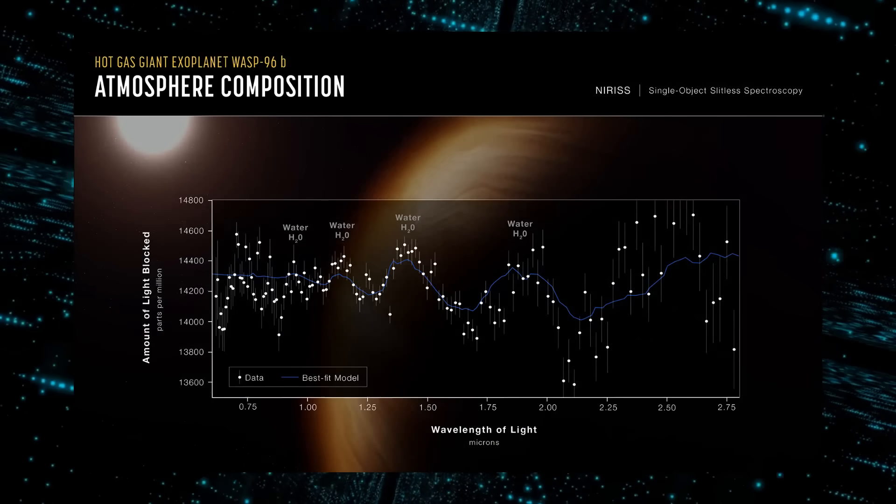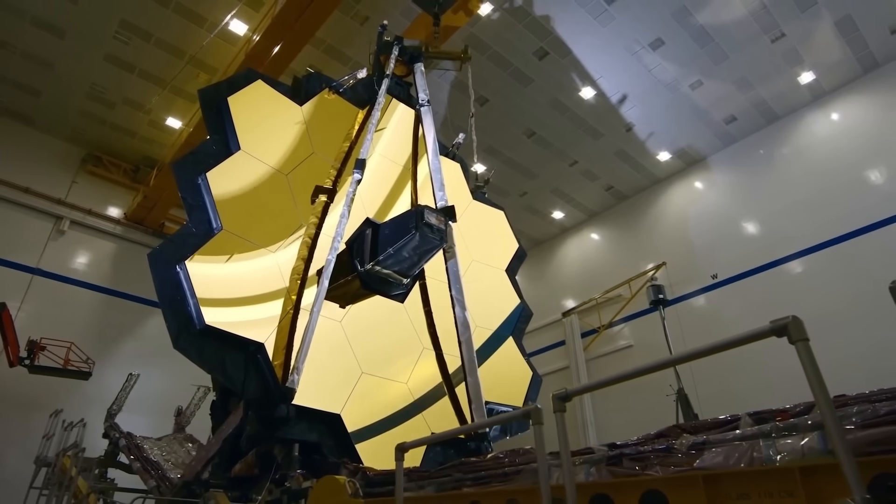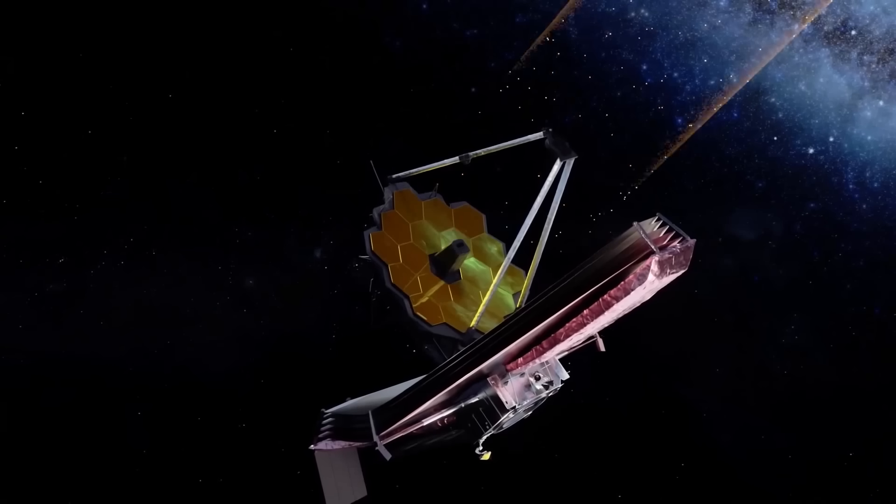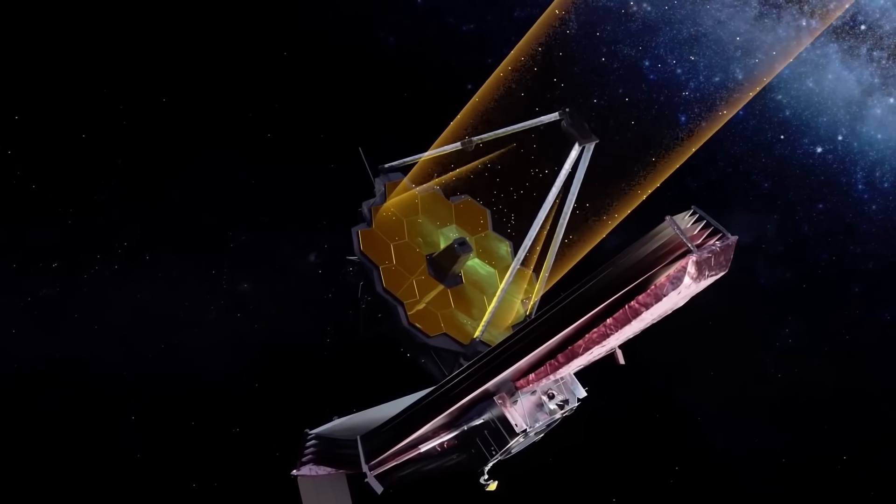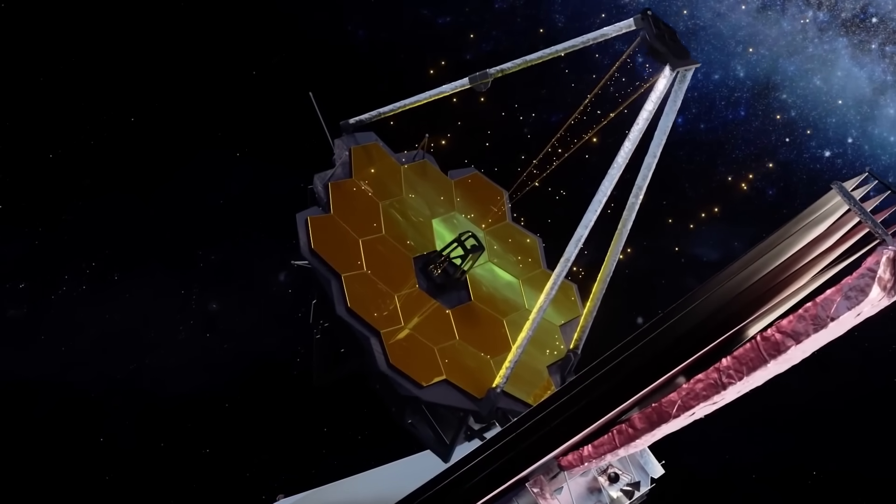The observation, the most thorough of its kind to date, shows off Webb's amazing capacity to study atmospheres thousands of light-years away. Based on small reductions in the brightness of specific colors of light, it indicates the presence of particular gas molecules.